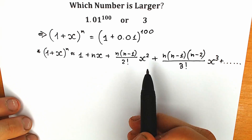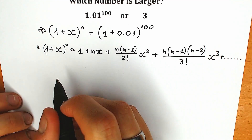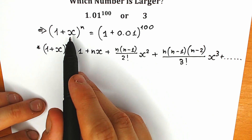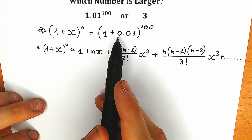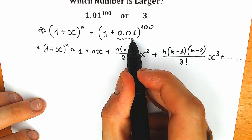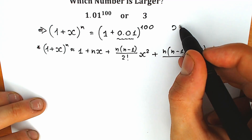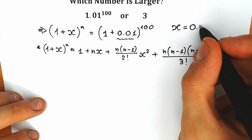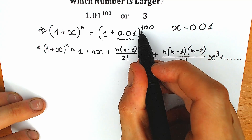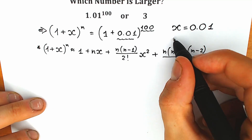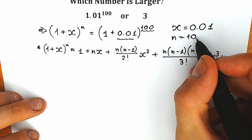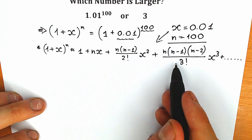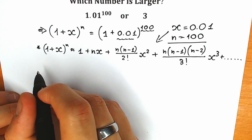Let's plug in our values. From the expression we can identify x equal to 0.01 and n equal to 100. Now let's substitute each of these elements into the formula.